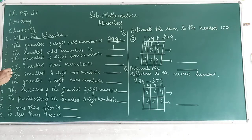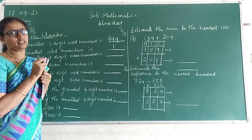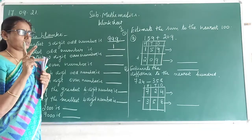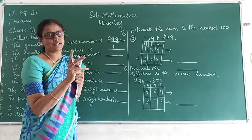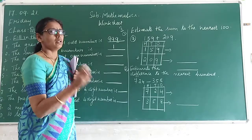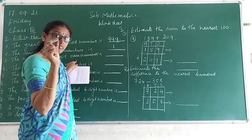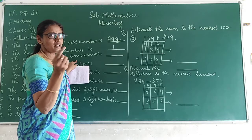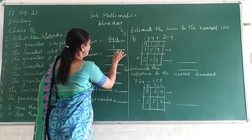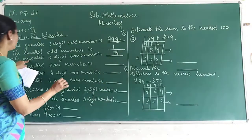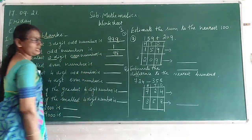Next step: greatest 2-digit even number. What is the greatest 2-digit even number? The greatest 2-digit number is 99, but the question asks for the greatest 2-digit even number. So the greatest 2-digit even number is 98.